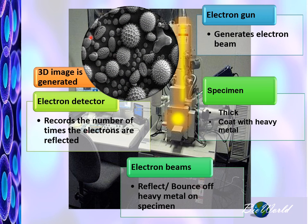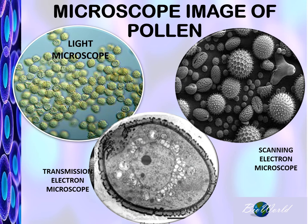So this is what flower pollen looks like under the scanning electron microscope. Although the same specimen has been used, the images we get are different because of the different microscopes being used. So let's move on to discuss the differences between each microscope.